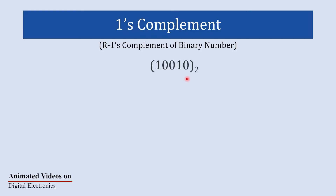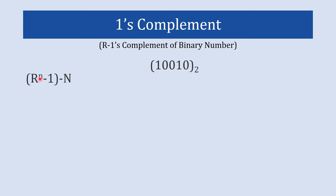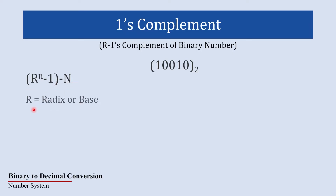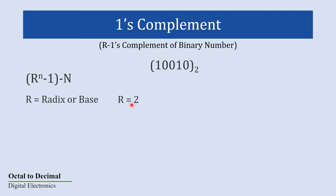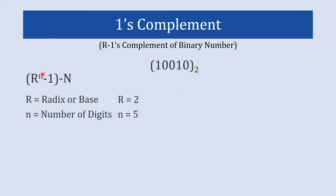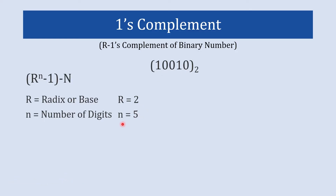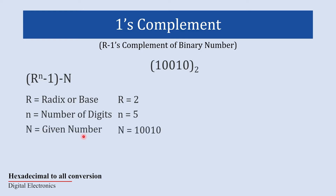So here we will find the 1's complement of a binary number. The equation to find 1's complement is r raised to n minus 1, minus N. Here r is the radix or base — because our system is binary, r equals 2. The n is the number of digits; here we have 5 digits so n equals 5. Capital N is our given number, so 1 0 0 1 0 is capital N.